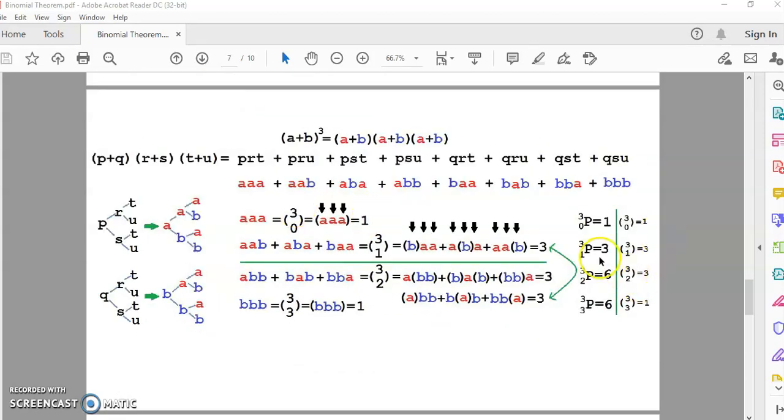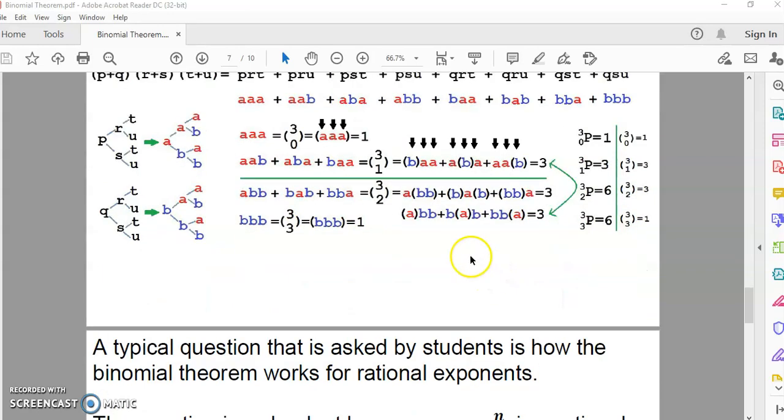So, that ultimately, what you have is that the permutation of three things taken zero, one, two, and three at a time is one, three, six, six. And the combination is one, three, three, one. As you can notice, there is a reflection. Sometimes there is a middle term there, which is unique, which is not the same as those on either sides of it, which are a reflection. So, that's pretty much it.